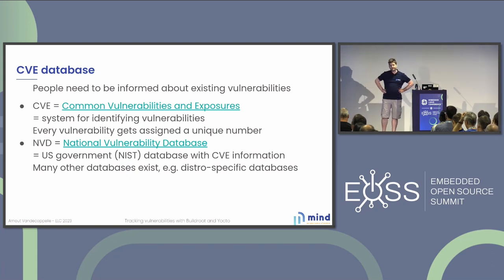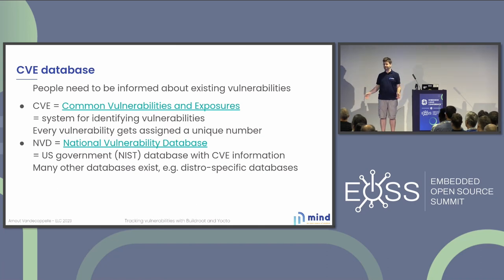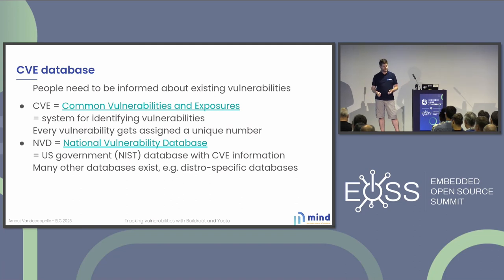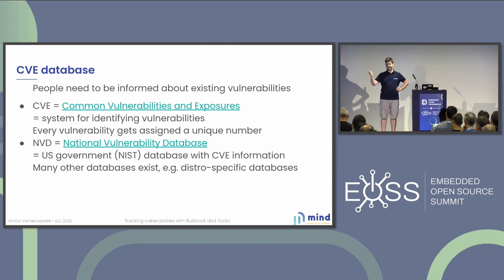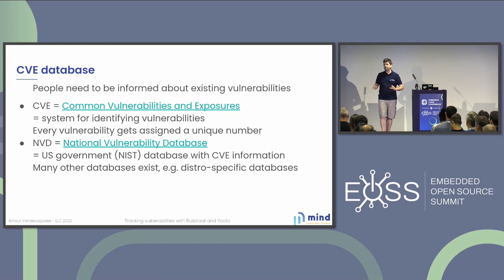So how can we track these vulnerabilities? The first thing we need is a way to be aware of them. One way would be to do constant audits of all the open source and closed source software you integrate in your product, but that is not feasible. Because everybody in the world has this problem, a kind of solution was created early this millennium called the Common Vulnerabilities and Exposures. CVE is basically a system for identifying vulnerabilities — not much more than an ID, a number.